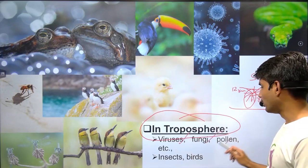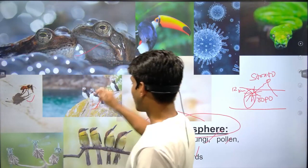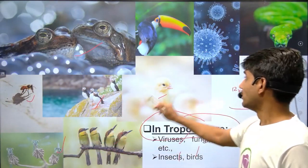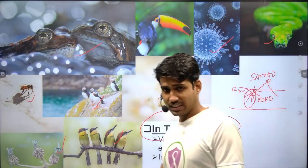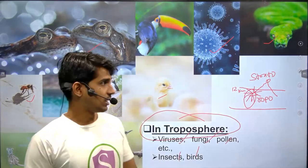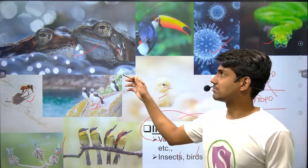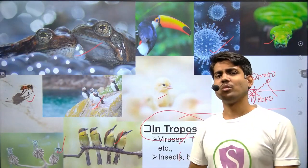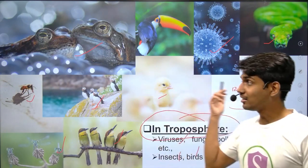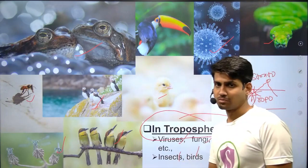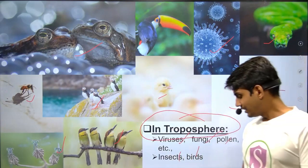In the troposphere we find various life forms: viruses, fungi, pollens, insects, birds, bacteria, snakes, humans, elephants, orthoptera, and many others. Most of these are the tropospheric life forms present in the lower layers of the atmosphere.